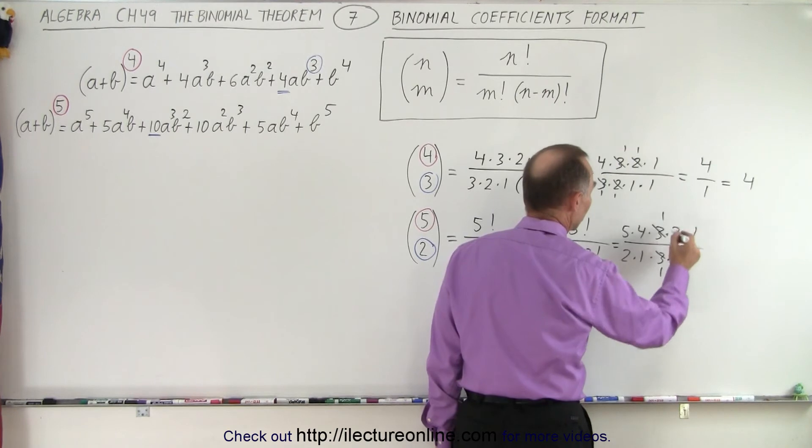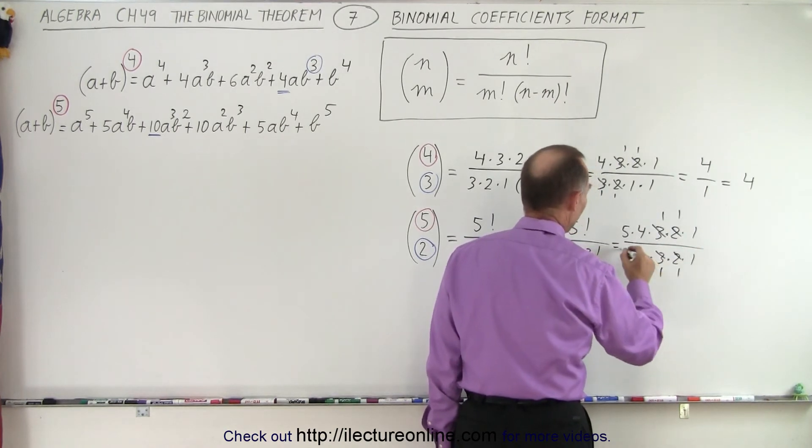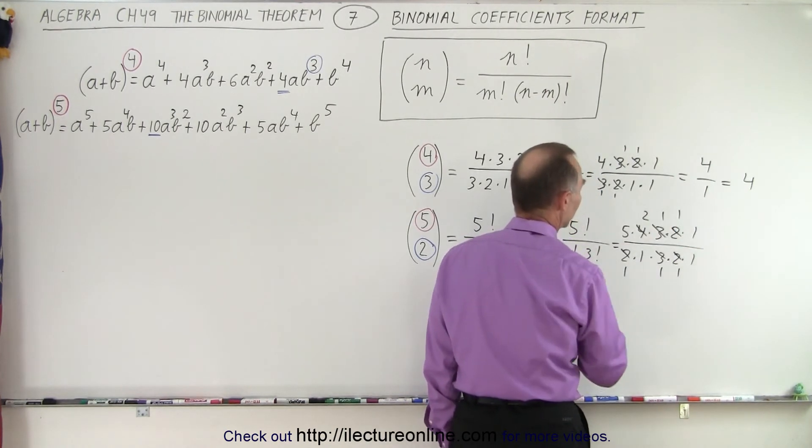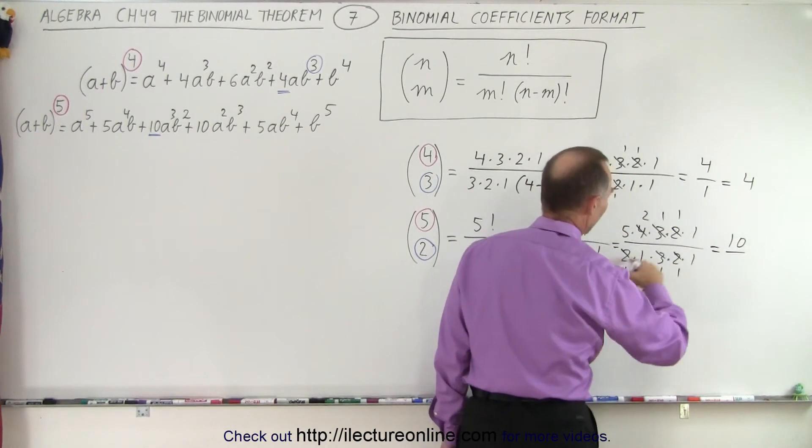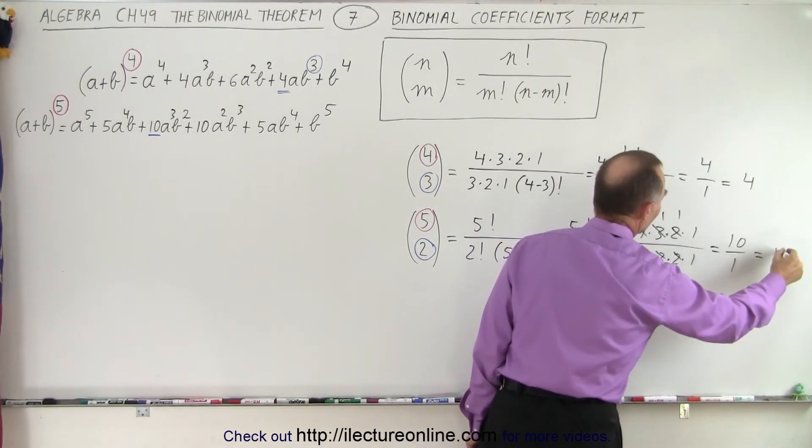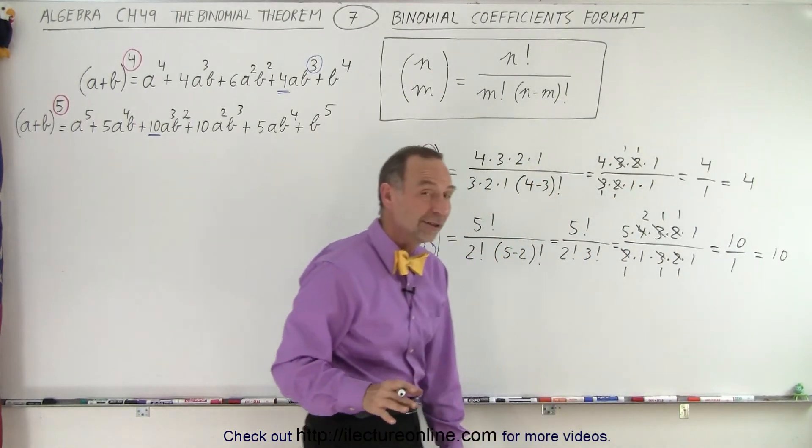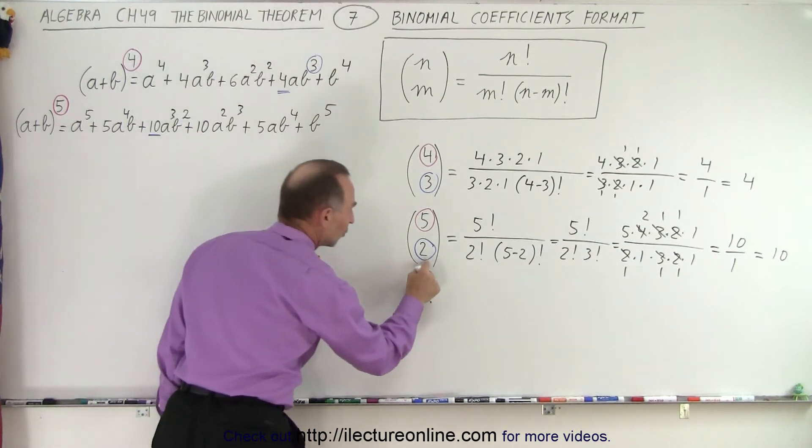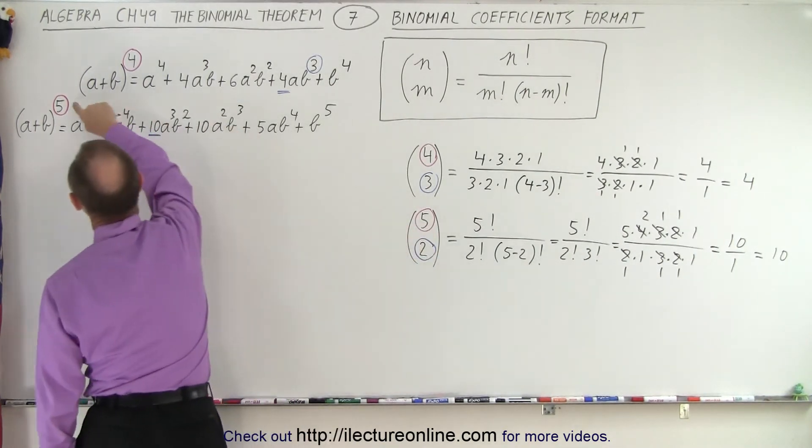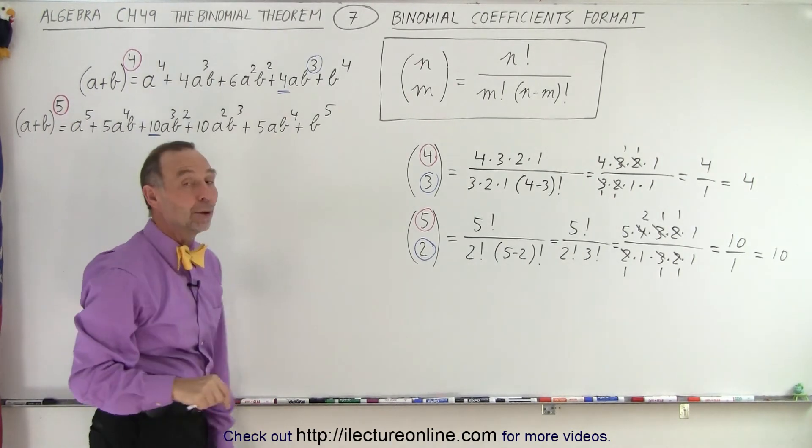The 3 cancels with the 3, the 2 cancels with the 2, and another 2 cancels with the 4. Now we have 5 times 2, which is 10 in the numerator, divided by 1s in the denominator, equaling 10. Again, we got the right answer—the numerical coefficient of the term where b is squared, corresponding to the 2, and 5 is the exponent of the binomial expansion.